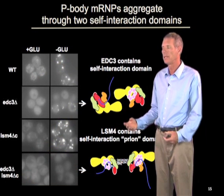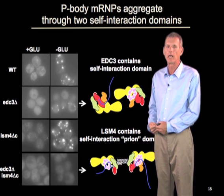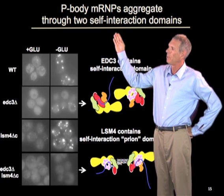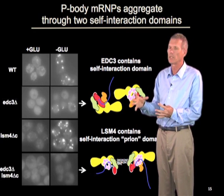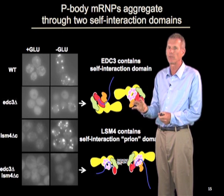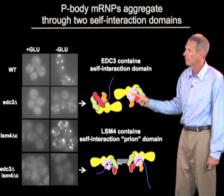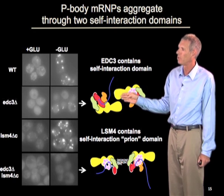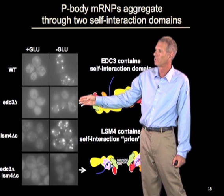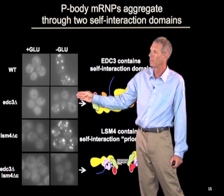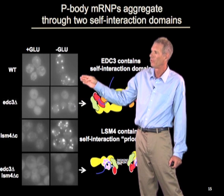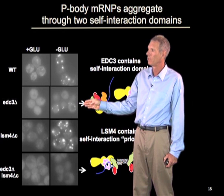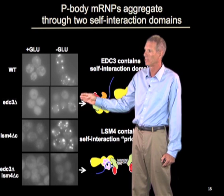We understand how these RNAs come together into higher-order structures from our analysis of protein-protein interactions. P-body mRNPs come together to form a larger structure through two self-interaction domains. One is on the EDC3 protein, which can dimerize with itself. If you disrupt that interaction, the number of p-bodies drops dramatically, although a few can still form. This is shown comparing a wild-type cell starved to make large p-bodies, versus removal of the EDC3 protein where some still form.